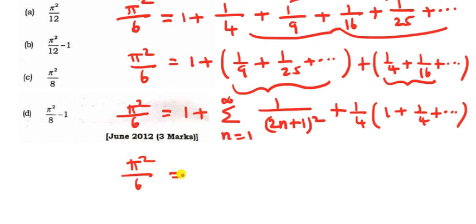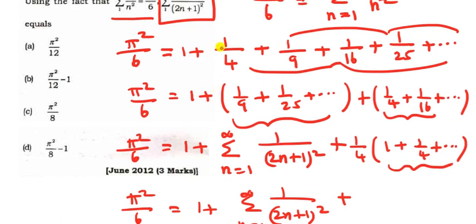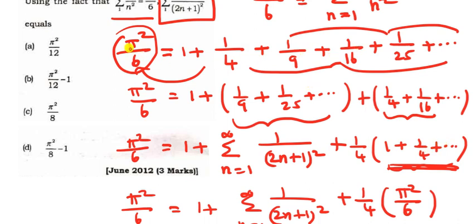Pi square divided by 6 equals 1 plus summation n equal to 1 to infinity of 1 divided by (2n plus 1) whole square. That is: 1 plus 1 by 4 plus 1 by 9 plus 1 by 16 plus 1 by 25. So pi square by 6 equals 1 plus 1 by 4 plus 1 by 9 plus etc. Using the given factor, we understand pi square divided by 6, and rearranging: 1 by 4 plus 1 by 9 value is 1 plus 1 by 4, which equals pi square by 6.